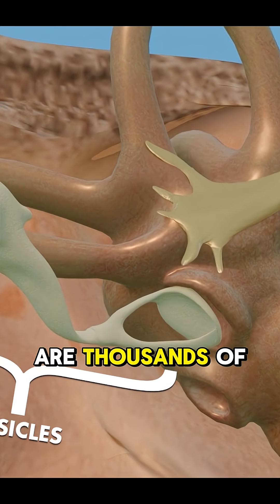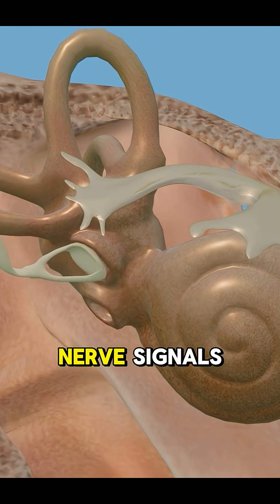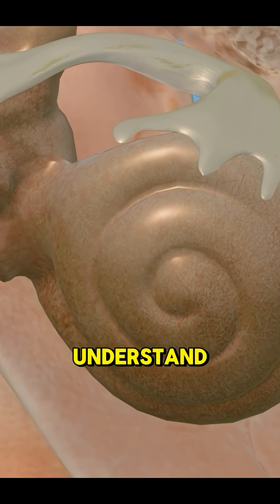Inside the cochlea are thousands of tiny hair cells. They turn those sound waves into nerve signals your brain can understand.